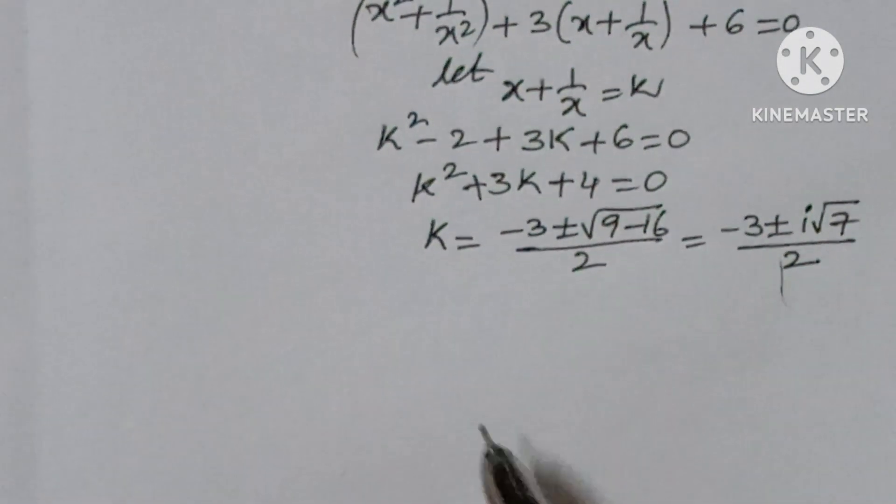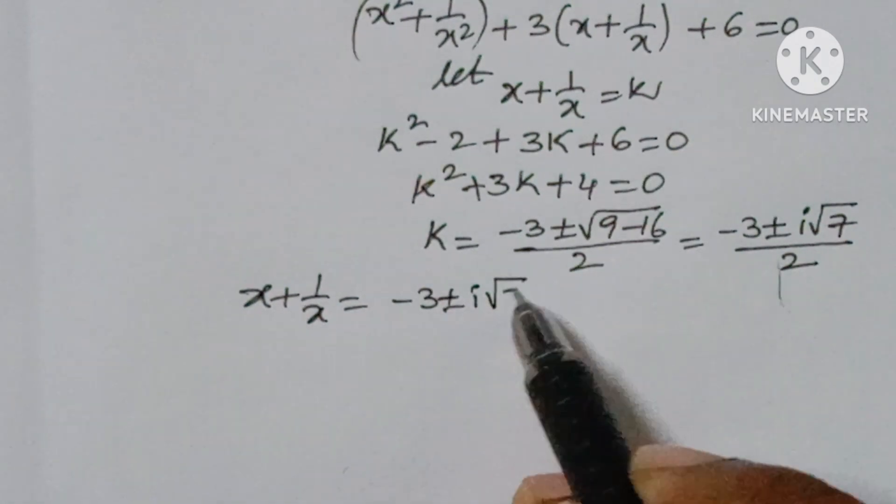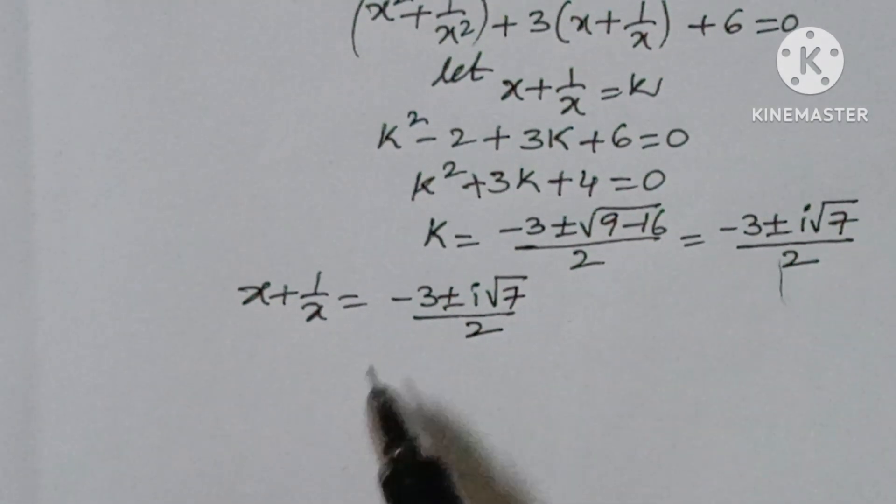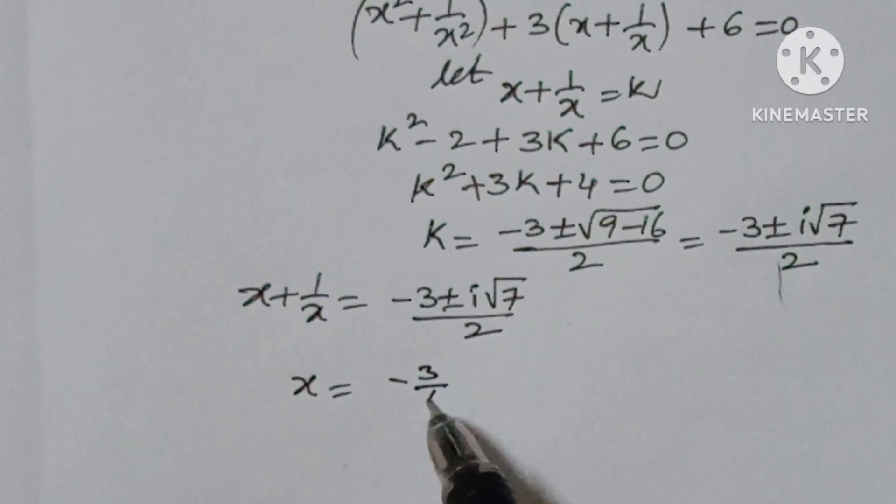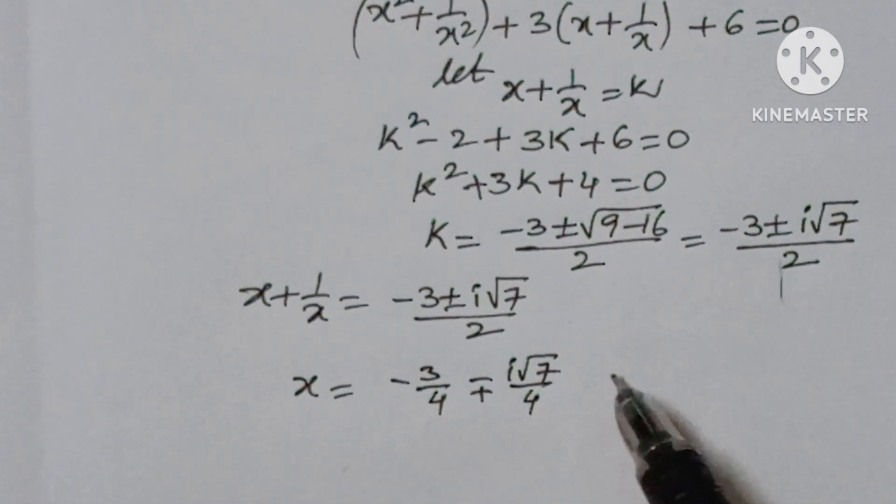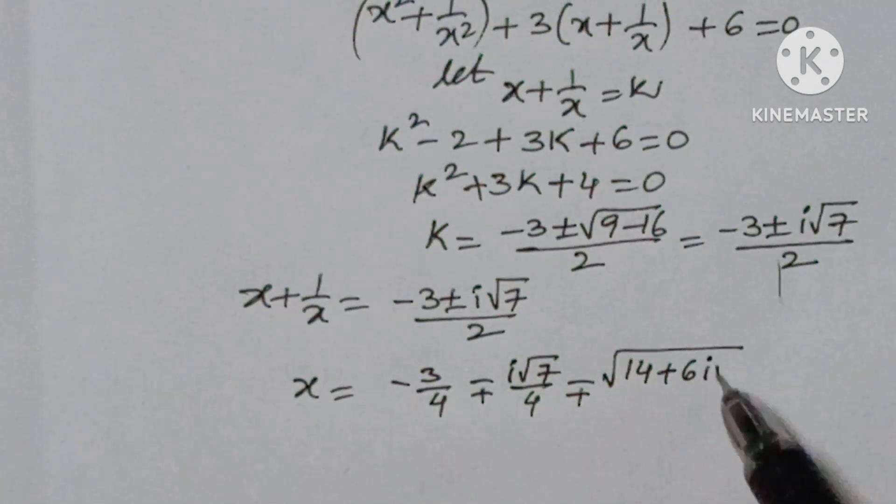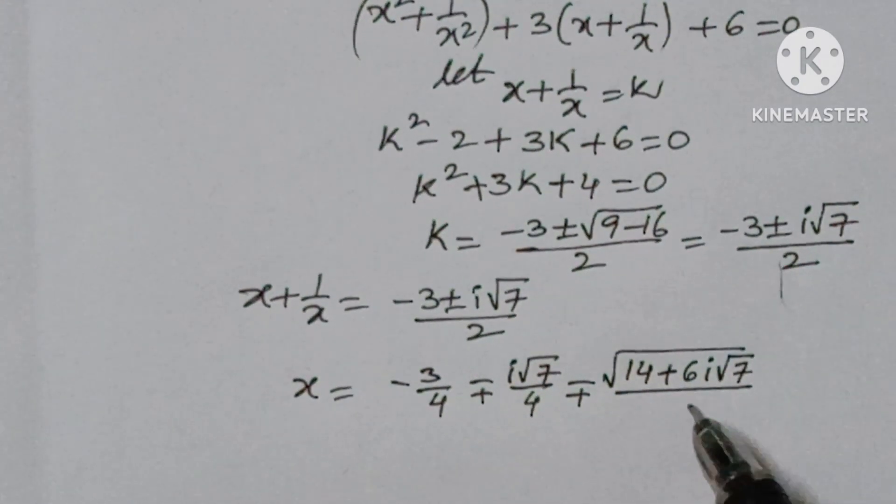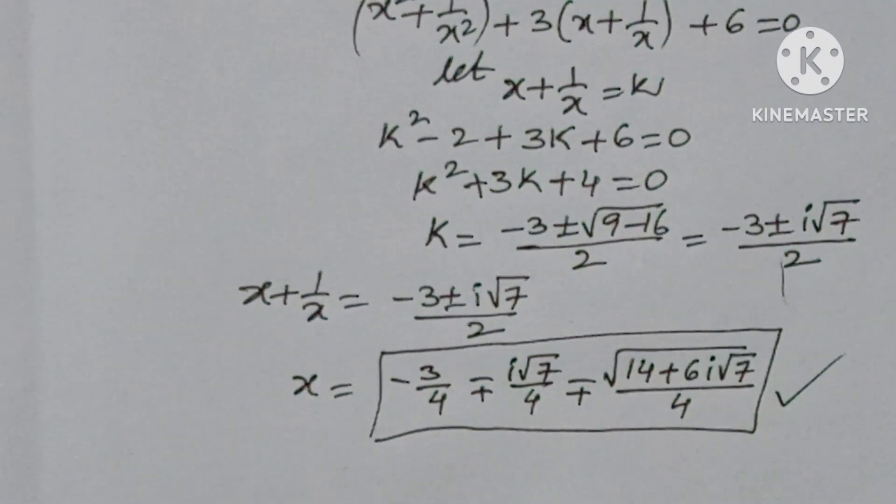Now x plus 1 by x equals minus 3 plus or minus i root 7 by 2. So x equals minus 3 by 4 plus or minus i root 7 by 4 plus or minus square root of 14 plus 6i root 7 by 4. So you will get 4 values of x.